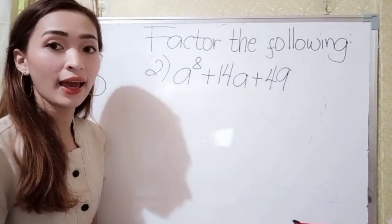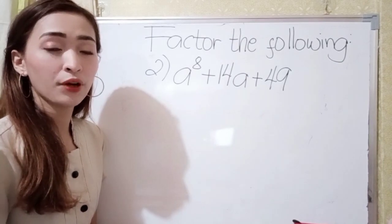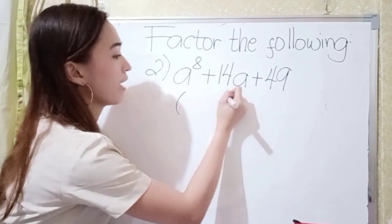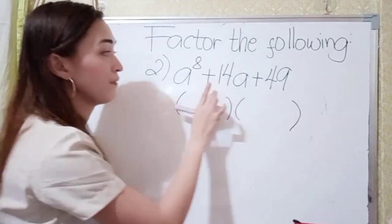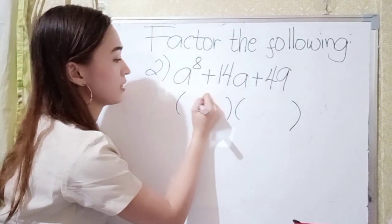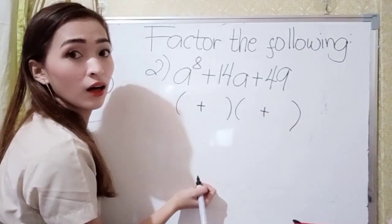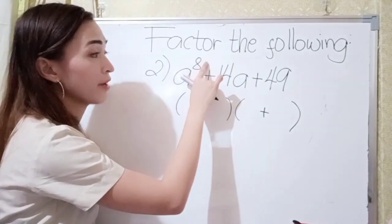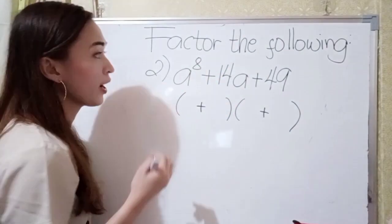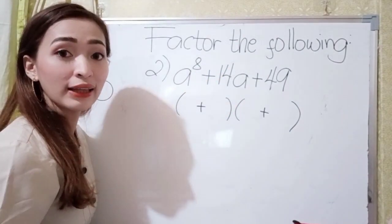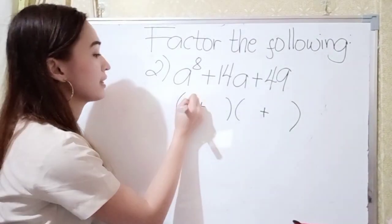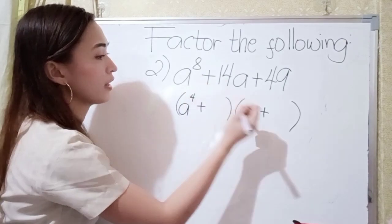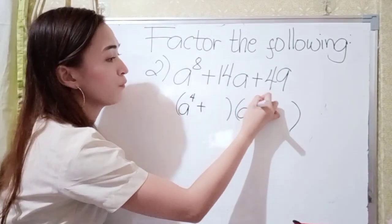For number 2, we have a raised to the 8th power plus 14a plus 49. Again, let's have the grouping symbol. Since this is plus, just write plus here and also here. Next, what is the square root of a raised to the 8th power? We just divide 8 by 2 — so that is a to the 4th power. 8 divided by 2 is 4, so we have a to the 4th power here and also here.